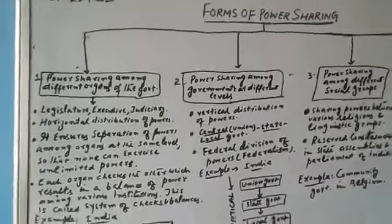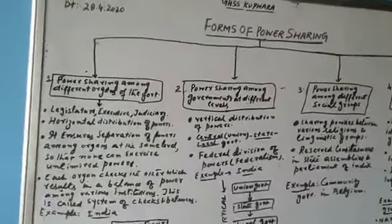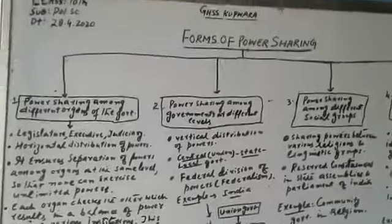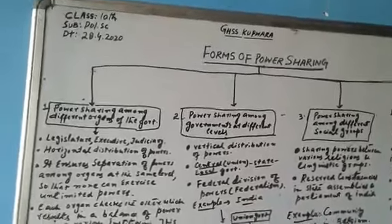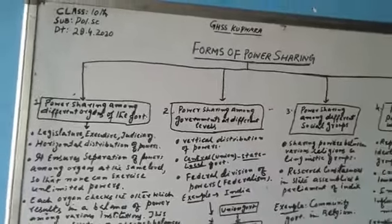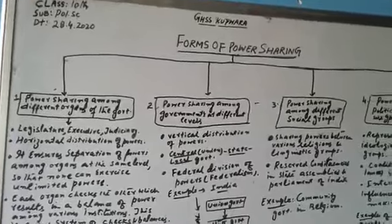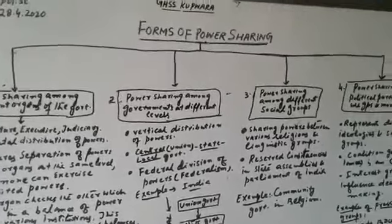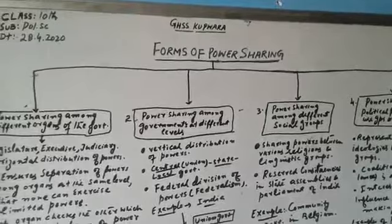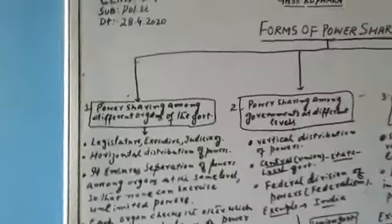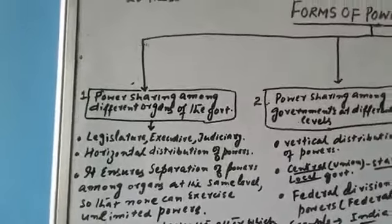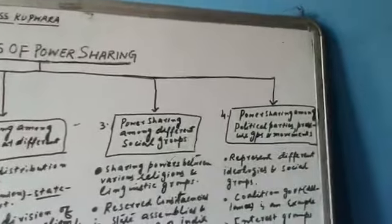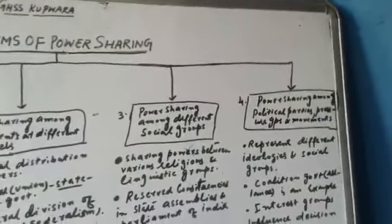With democracy, there is no concentration of powers — there is sharing of powers. So when the concept of democracy came, the concept of power sharing developed. In modern democracy, we have four forms of power sharing: among different organs, among different levels, among social groups, and among political parties, pressure groups and movements.